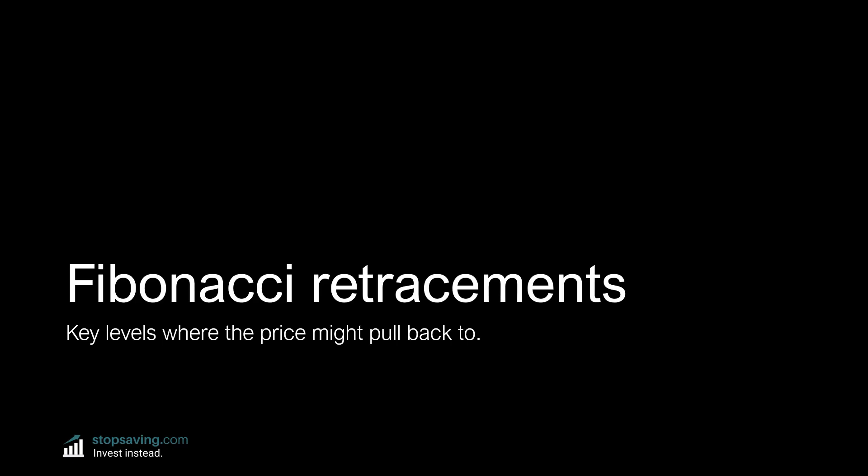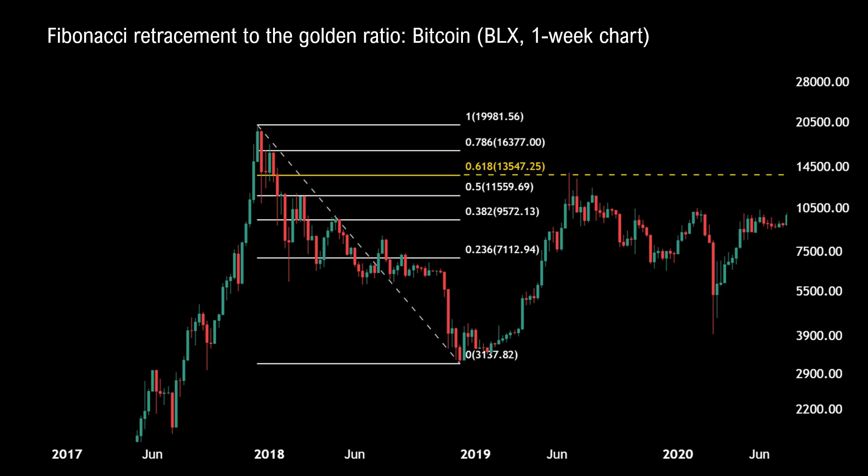So that's the maths behind Fibonacci numbers. Let's now move on to how you can actually use them in your trading or investment strategy. We'll start with Fibonacci retracements — these are key levels where the price might pull back to. Let's start with none other than Bitcoin, and I'm using the one-week chart here. Keep in mind that I'm using the log chart in TradingView — log charts are much better for longer-term timeframes, as they focus on percentage gains rather than price gains.